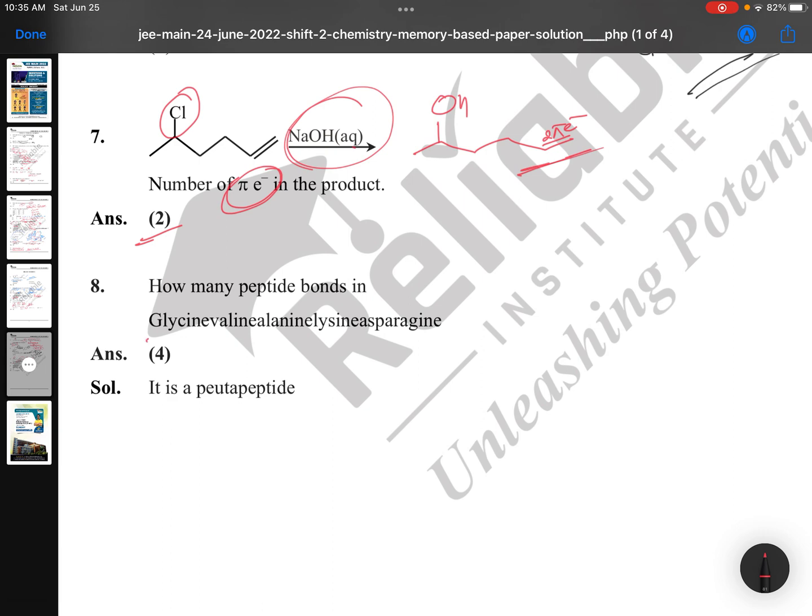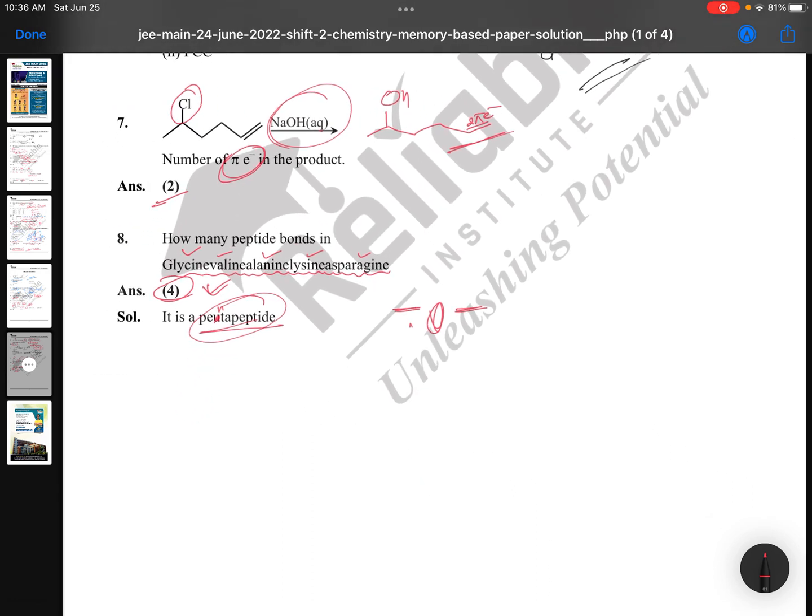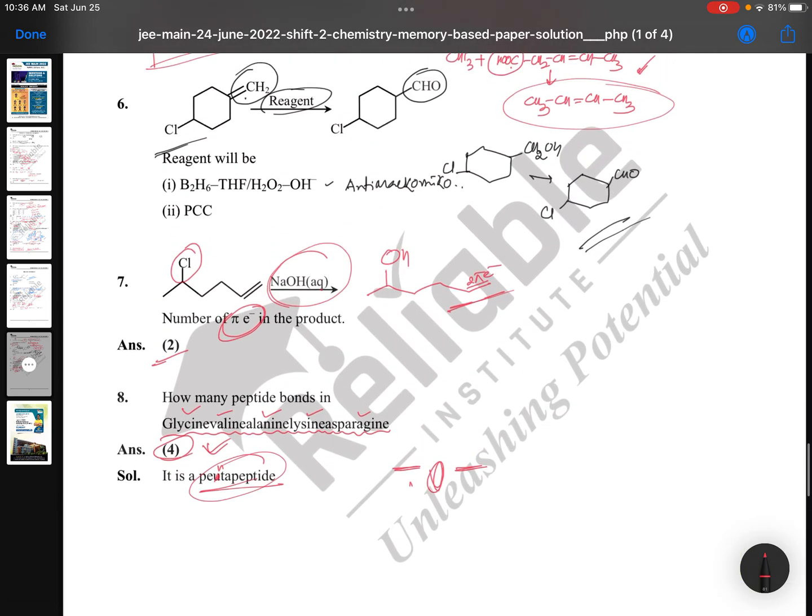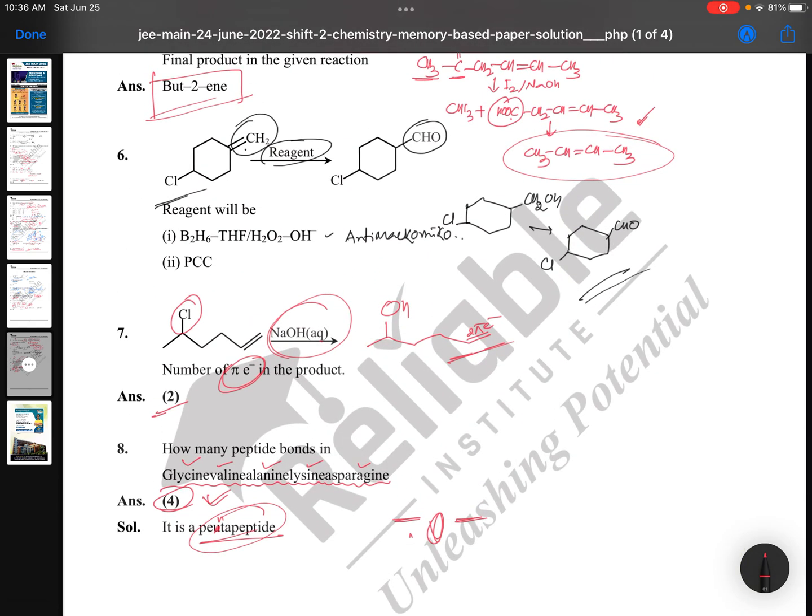How many peptide bonds in glycine-valine-alanine-lysine-asparagine? You can see this is pentapeptide: glycine, valine, alanine, lysine, and asparagine. Five are there, when five are attached that means it has four peptide bonds. Very simple. Decapeptide has nine bonds, nonapeptide eight bonds, dipeptide one bond. Here this is pentapeptide, so number of peptide bonds will be four. We will come with more questions from coming question papers. Try to be with us, and thank you all.